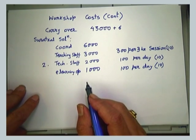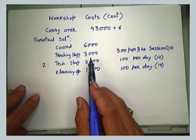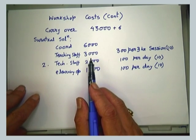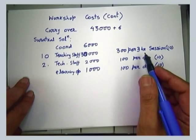I have taken 10 guys for teaching staff — 10 guys for 10 days, which comes to around 30,000. So 10 guys for each of the 10 days? Yes. It is 300 multiplied by 10 into 10 days. So there could be more teachers than participants.